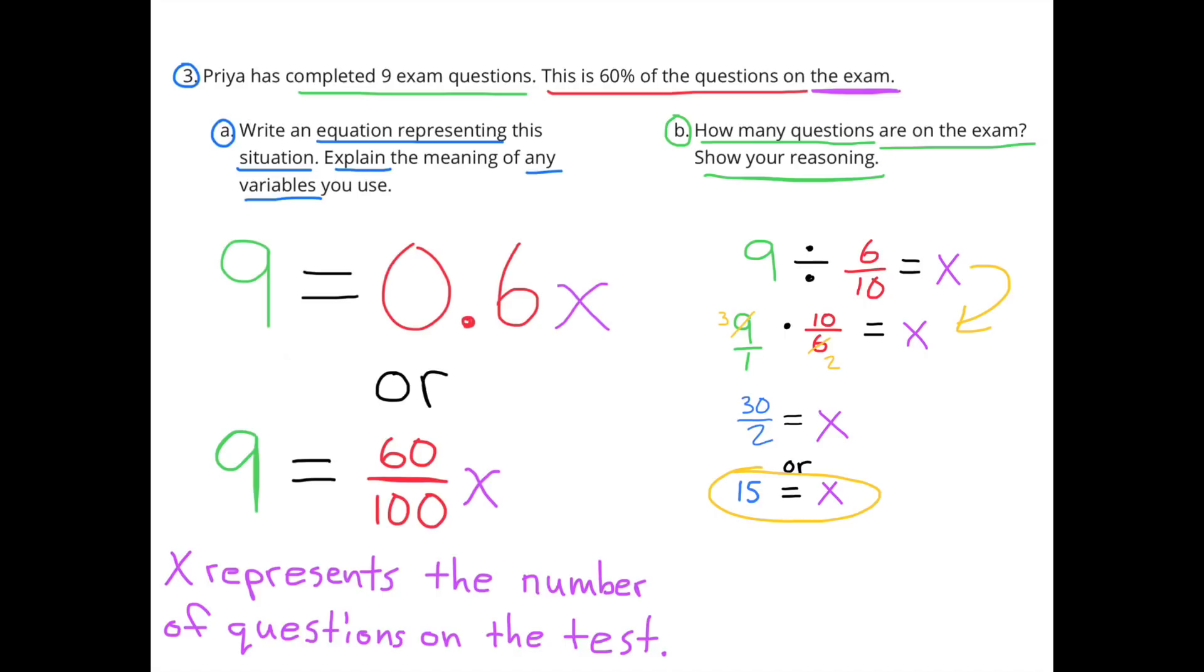Part B: How many questions are on the exam? Show your reasoning. 9 questions divided by 6 tenths, or 60%, will tell me the number of questions on the test. 9 divided by 6 tenths can be figured out by multiplying times the reciprocal of 6 tenths. So 9 times 10 sixths equals X. 9 times 10 sixths equals 30 halves, or 15. So X equals 15. There are 15 questions on the exam.